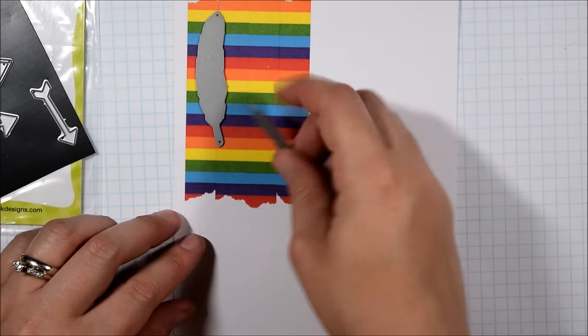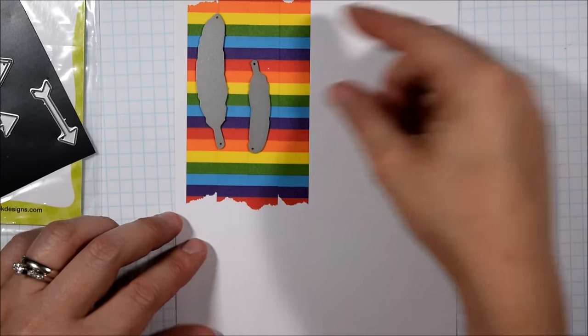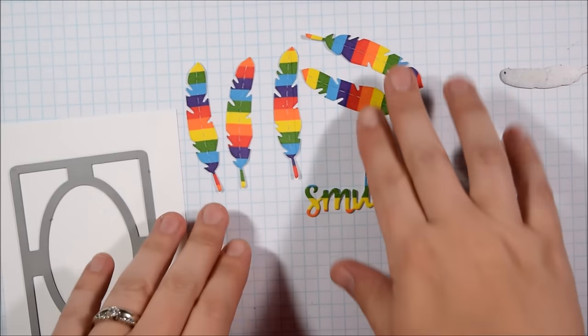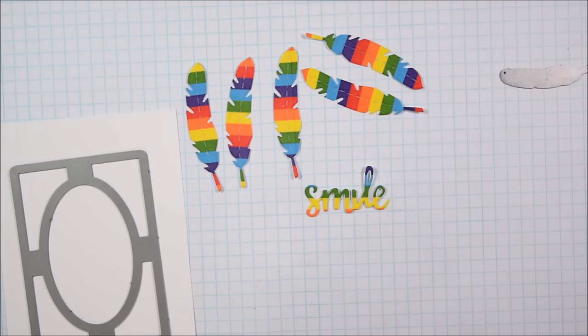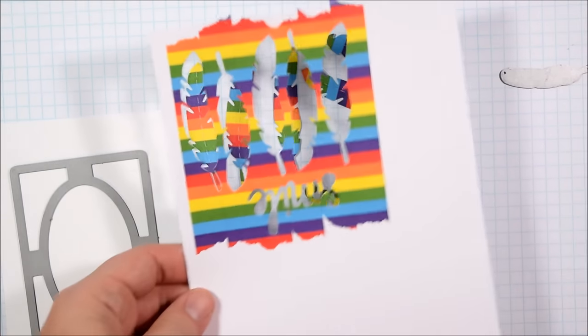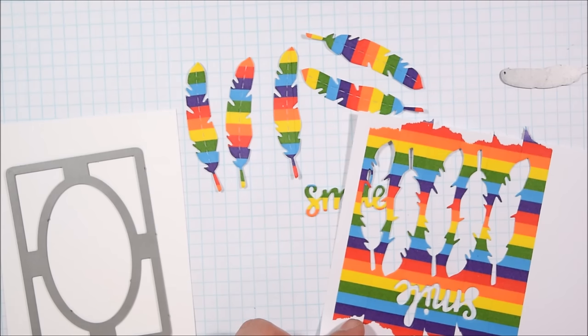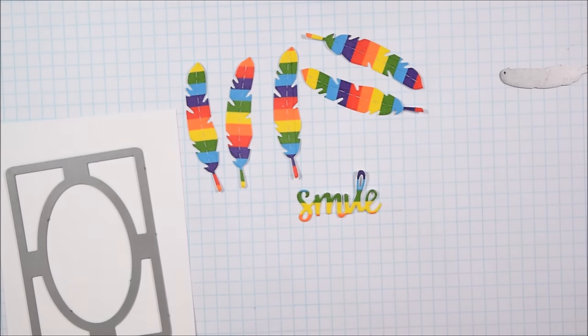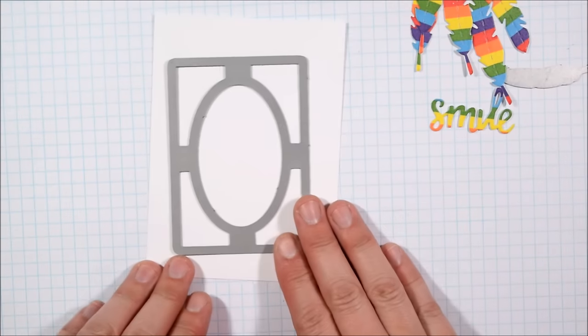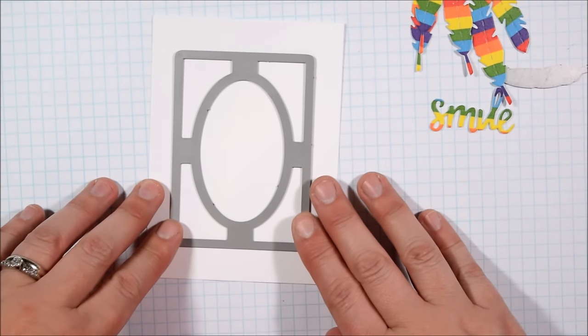Or color stripes with markers like Copic markers—you can use a ruler and just draw some stripes across it. Regardless of how you do it, you can then die cut your images out of that piece of cardstock and have the look of rainbow across all of the die cuts. So I chose to die cut that large feather five or six times and I chose to die cut the smile sentiment which is from a different Newton's Nook stamp set.